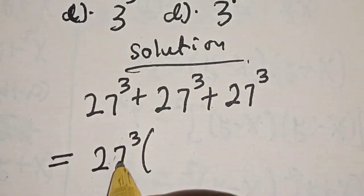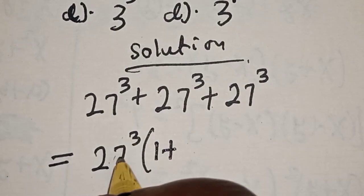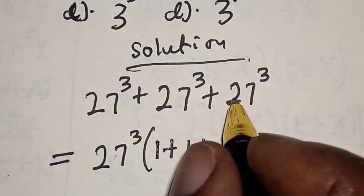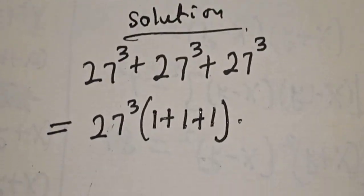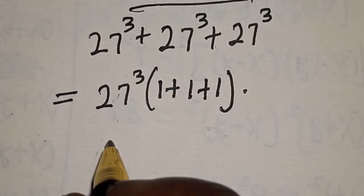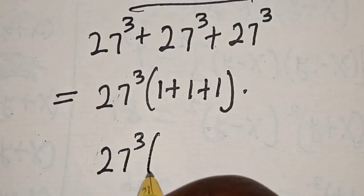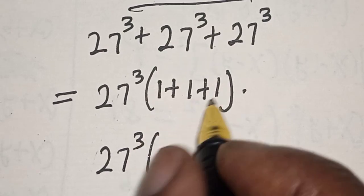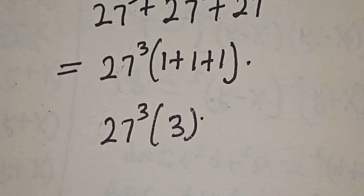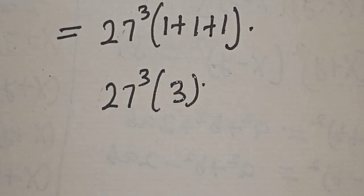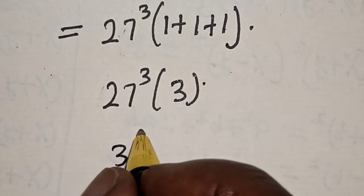This divided by this is one, plus this divided by this is one, plus this divided by this is one. So we have 27 raised to power 3 multiplied by 1 plus 1 plus 1, which gives us 27 raised to power 3 into 3.